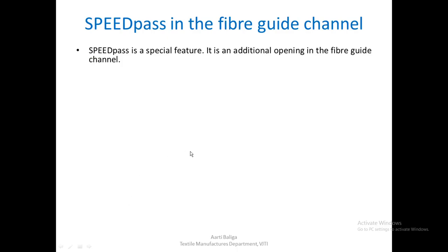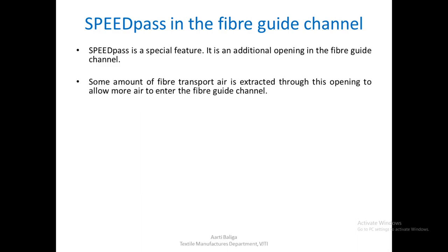There is one more arrangement in the fiber guide channel known as the speed pass — an additional opening in the fiber guide channel. Some of the fiber transport air is extracted through this opening, and because of this, more air is allowed to enter the fiber guide channel.